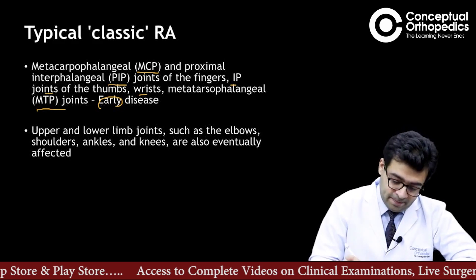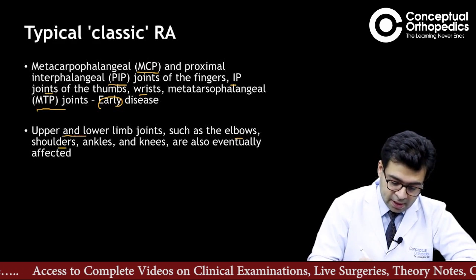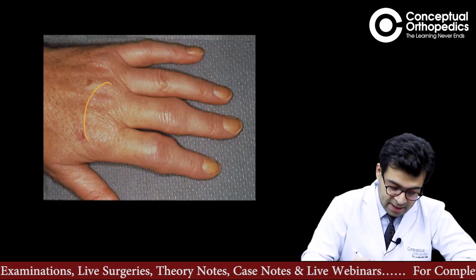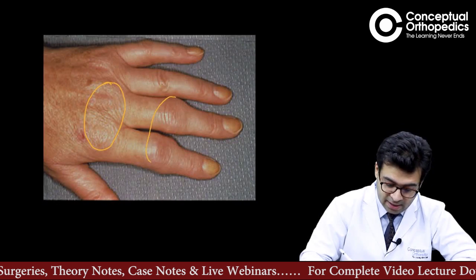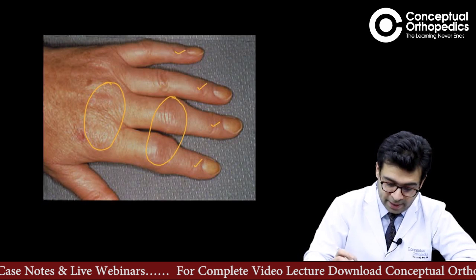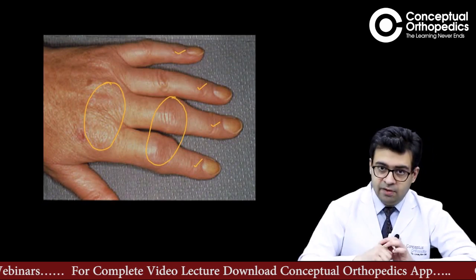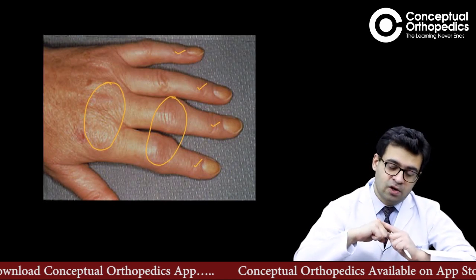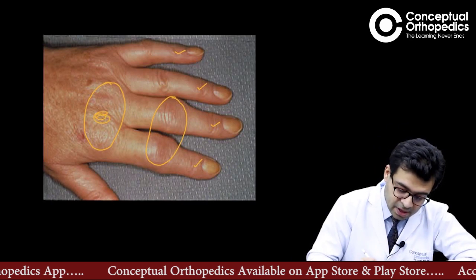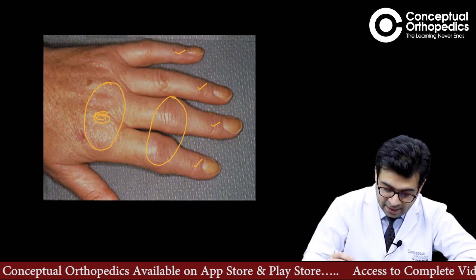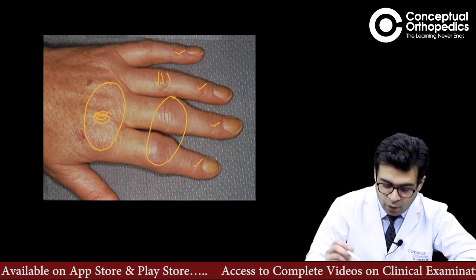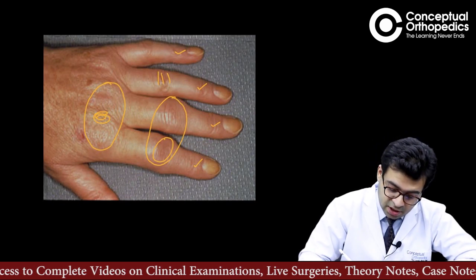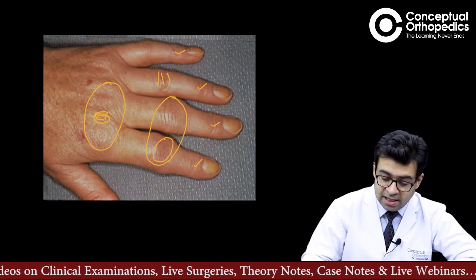Once the small joints are affected, other joints of the upper and lower limbs such as the elbow, shoulder, ankle, and knees are eventually affected. In the classical image of a rheumatoid arthritis patient, you can see swelling at the metacarpophalangeal joints and PIP joints, while the DIP joints are spared. An important clinical pearl: if you ask a patient to make a fist, swollen MCP joints will cause the grooves between them to be absent — there is fullness in those areas. The transverse skin ridges over PIP joints are also missing or reduced due to skin stretch, indicating swollen and inflamed joints.